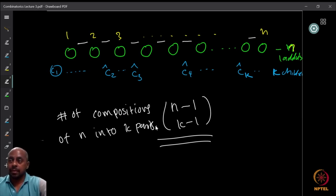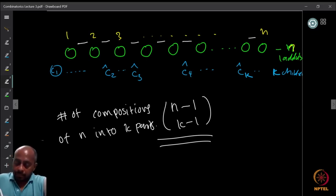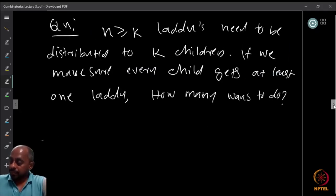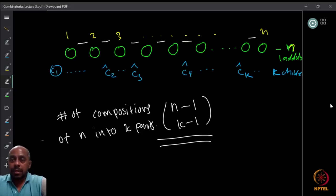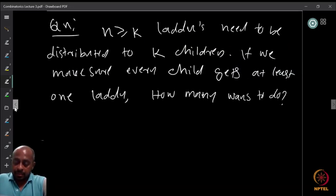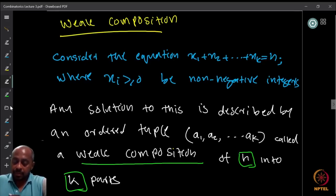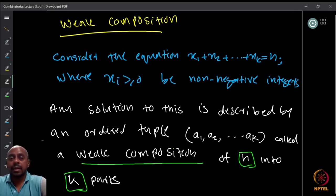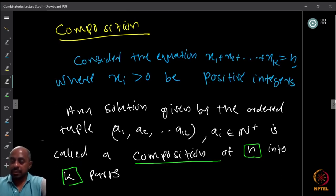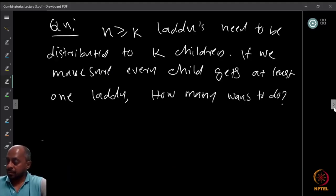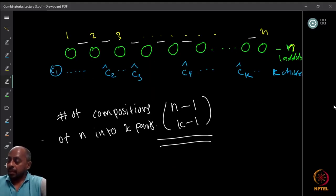Now we look at the first question — weak compositions — where x_i ≥ 0 instead of x_i > 0. We found that the number of compositions corresponds to ways of distributing sweets to children where everyone gets at least one. Now we want to solve the other question, allowing some children to get zero.